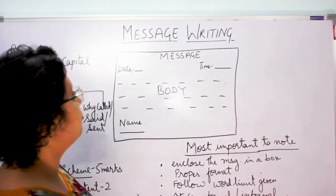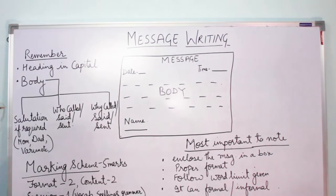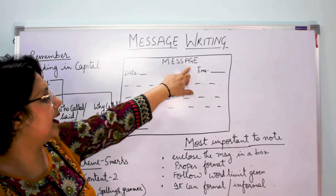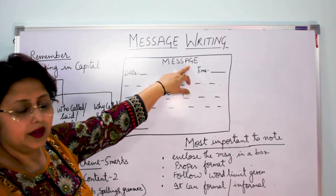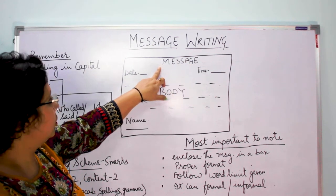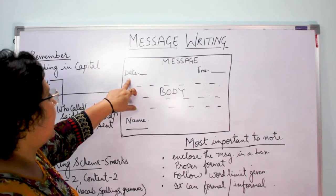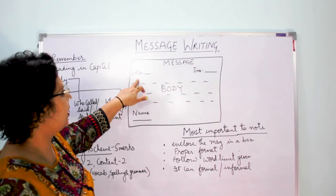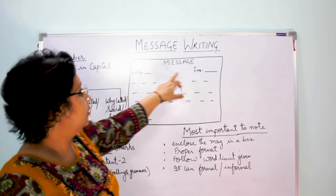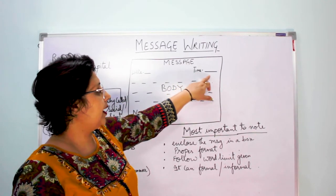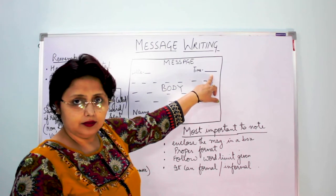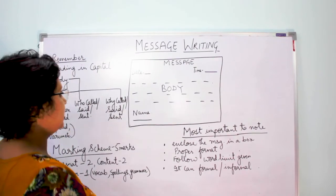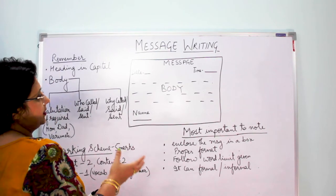So let us see what the format of message writing is. First of all, you will write MESSAGE on top in capital letters, then you will leave one line. Towards the left-hand side you will be writing the date, and towards the right-hand side you will be writing the time — when that message was written.